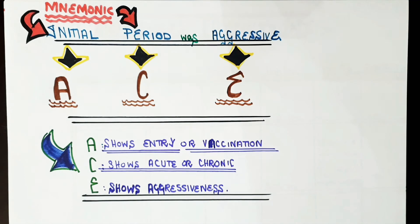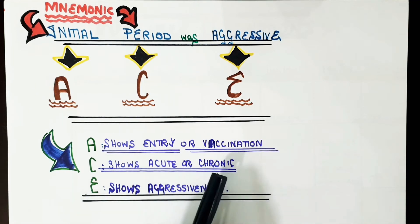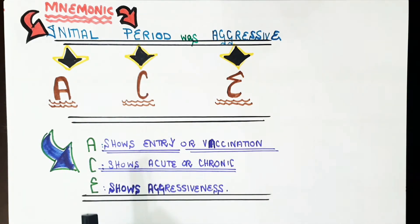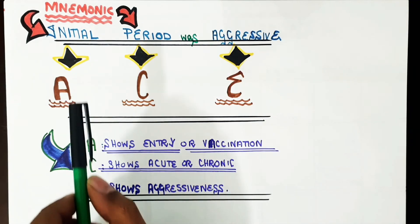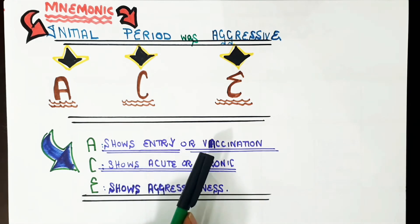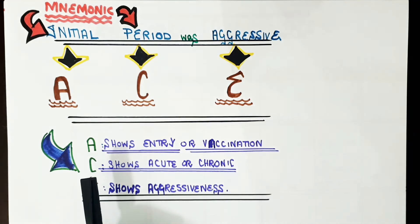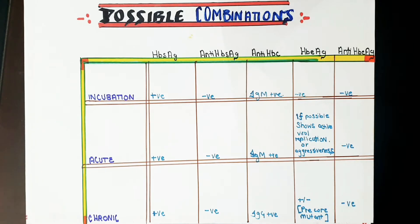In the ACE mnemonic: A corresponds to HBs antigen, showing the initial entry or vaccination; C corresponds to HBc, showing the acute or chronic time period; and E corresponds to HBe, showing the aggressiveness of the disease. So HBs antigen = entry, HBc = time period, HBe = aggressiveness.